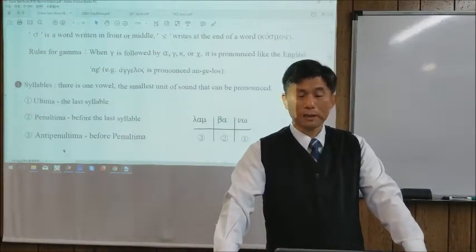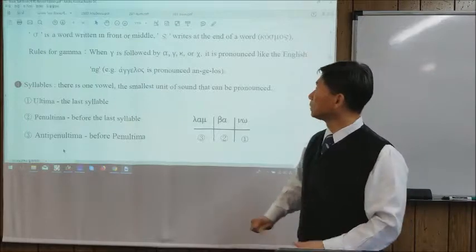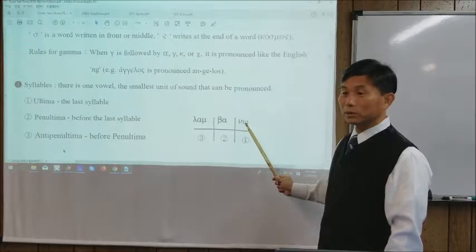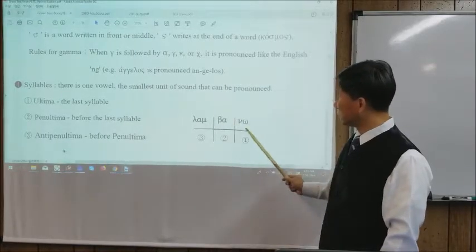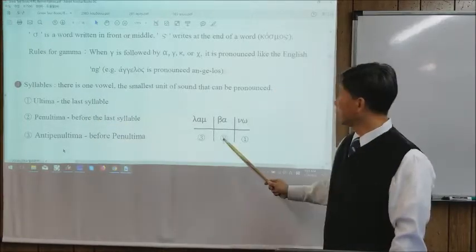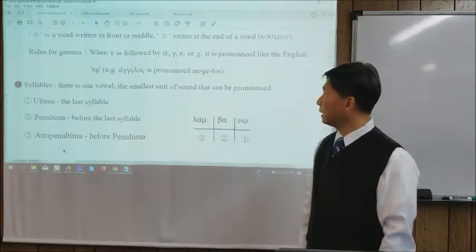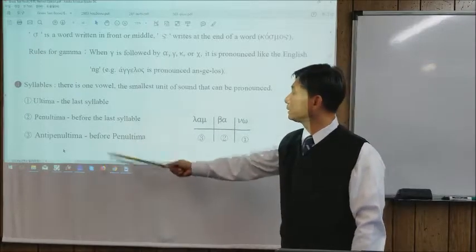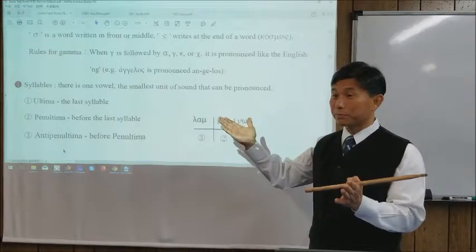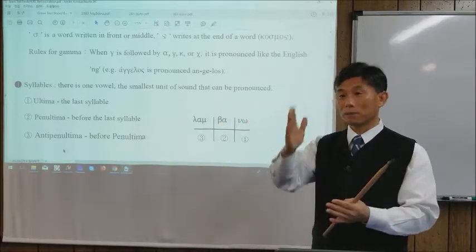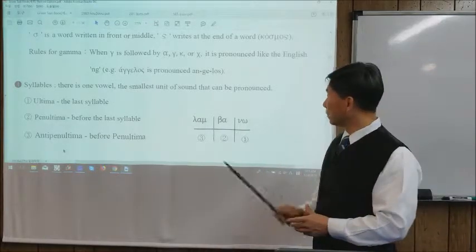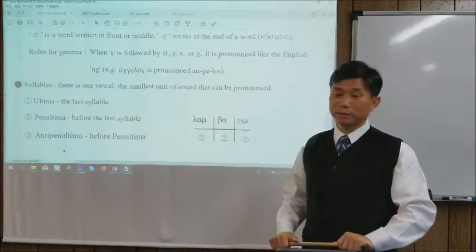There are names for each syllable position. The last syllable is called 'ultima,' the second-to-last is 'penultima,' and the third-from-last is 'antepenultima.' Greek only names three syllable positions. Words with four or five syllables have no names beyond those three.